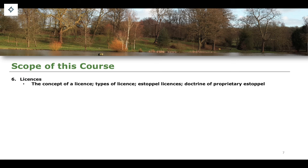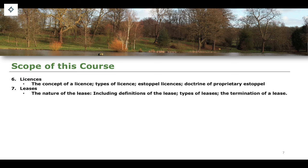Section six is going to look at licences — what a licence is, the types of licences that exist including estoppel licences, and the doctrine of proprietary estoppel specifically. Section seven will cover the leasehold — the concept of leases, including definitions, with the most pertinent definition coming from the case of Street v Mountford, the types of leases that exist, and the termination of a lease through a number of different methods, most substantively the method of forfeiture.